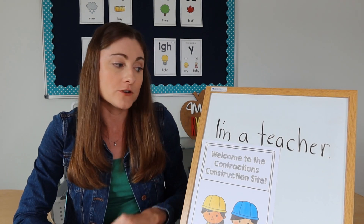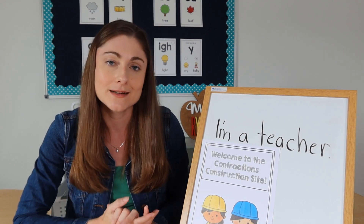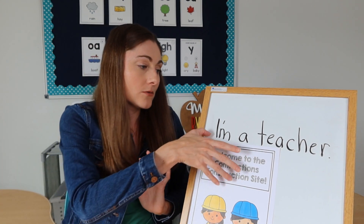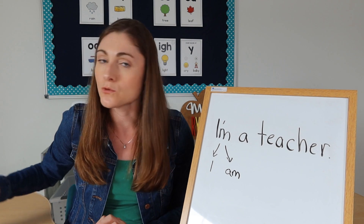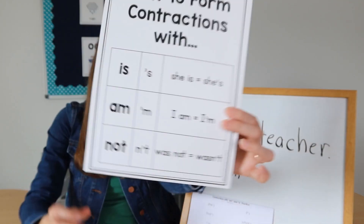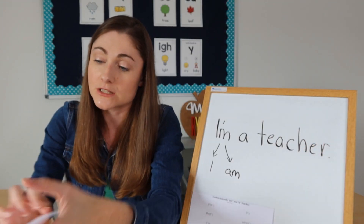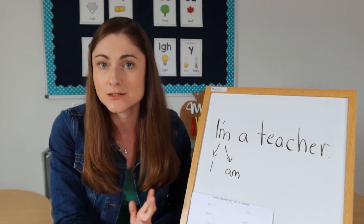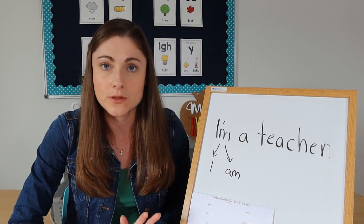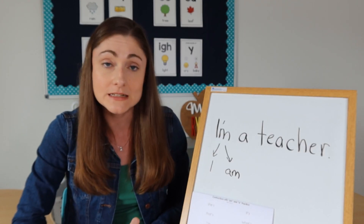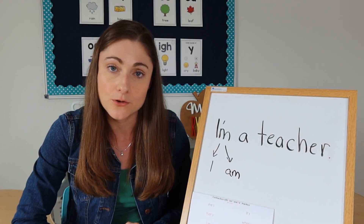Then maybe the next day they'll actually be writing contractions, or building them with magnetic letters, or whatever you want to have them do. So that's pretty much it — we moved from reading and coming up with oral examples, to reading on a half sheet with a partner, to doing our contraction construction. I teach 'is,' 'am,' and 'not' contractions first, and then we go from there as far as having the kids build, read, and write. You can gauge depending on how the lesson went — are you going to do more of the same, or move on to writing words or sentences with contractions? It totally depends on how your kids are doing.